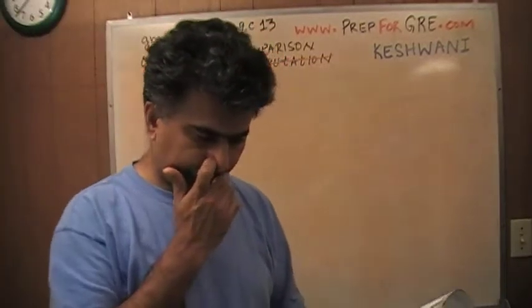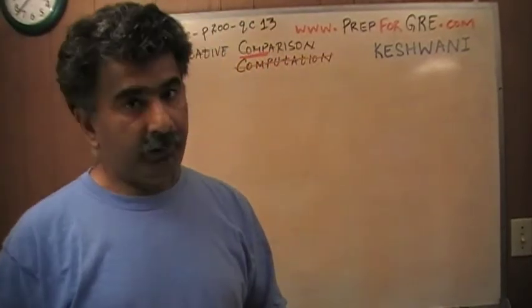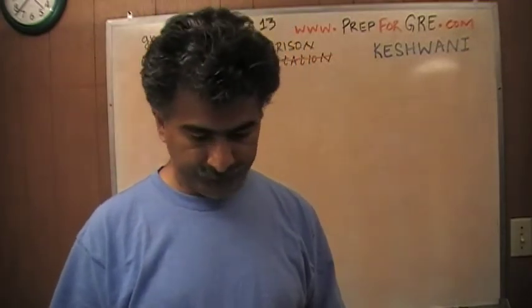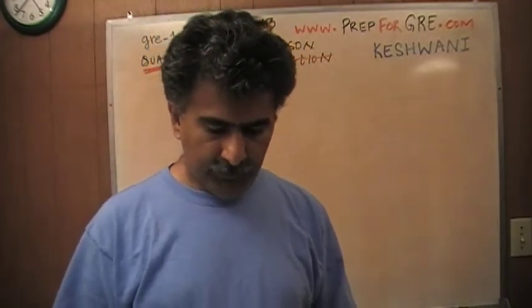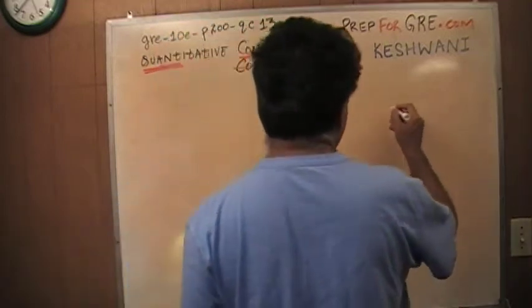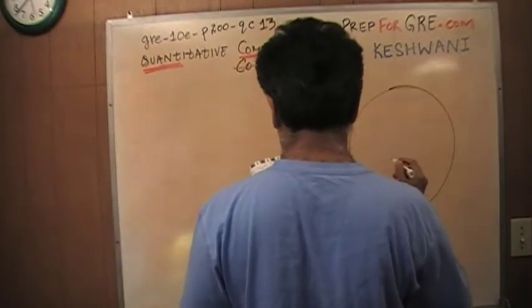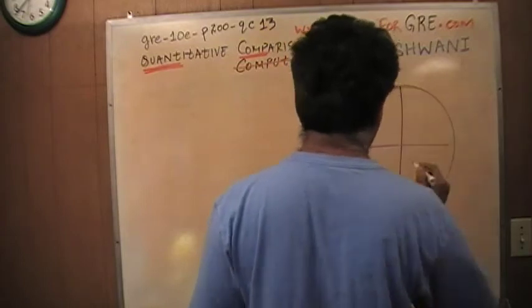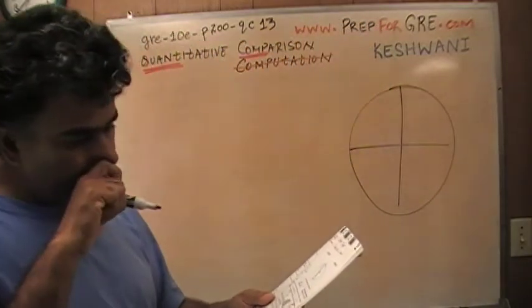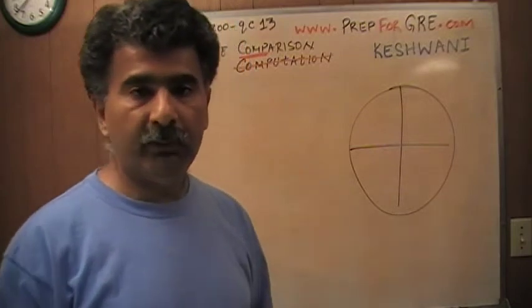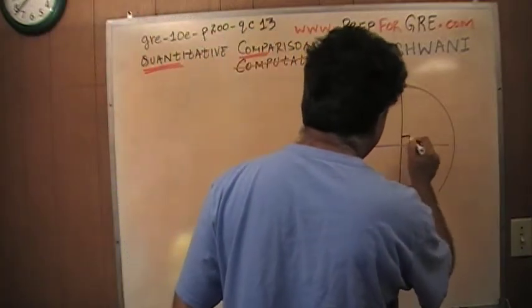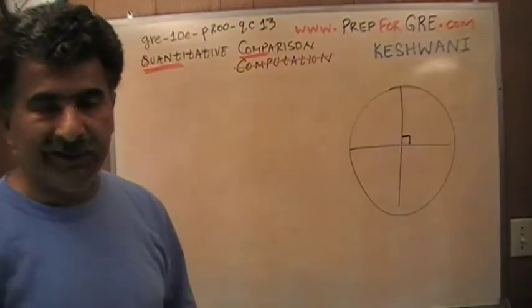But having said that, it also means that about two-fifths of the people got it wrong. So we will see what happens here. We are given a circle which is divided up into four equal parts. And how do I know that there are four equal parts? Because of this symbol right here. That symbol tells me that it is a 90 degree angle.